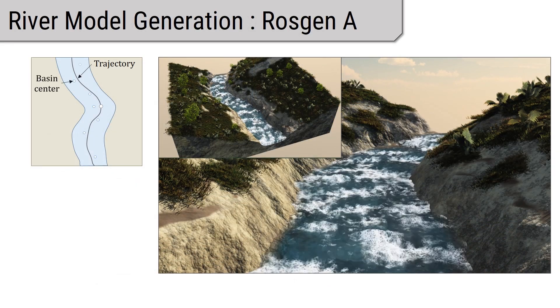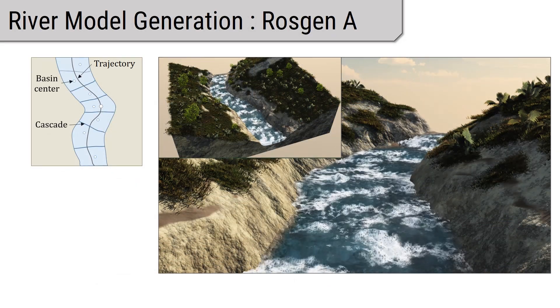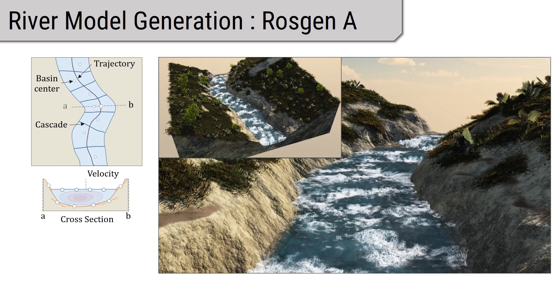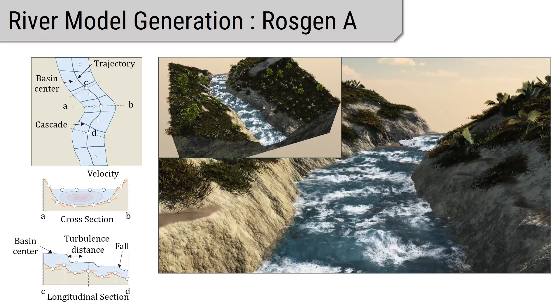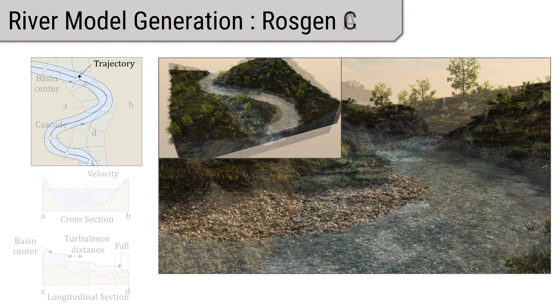Here you can see Rosjan type A, which is the steepest river type. The riverbed is characterized by a succession of waterfalls.